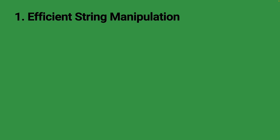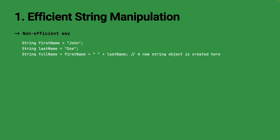First up, let's talk about string manipulation in Java. The String class is immutable, meaning once a string is created its value cannot be changed. When you perform operations like concatenation or substring, a new String object is created each time, which can lead to unnecessary memory allocation and increased overhead. The plus operator concatenates first name, a space, and last name to form the full name, but this results in the creation of a new String object in memory each time.